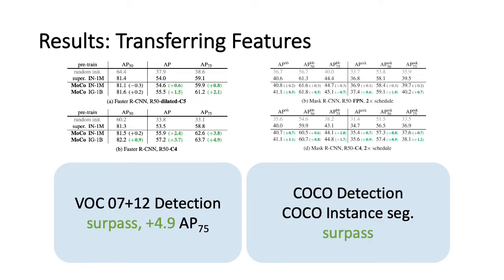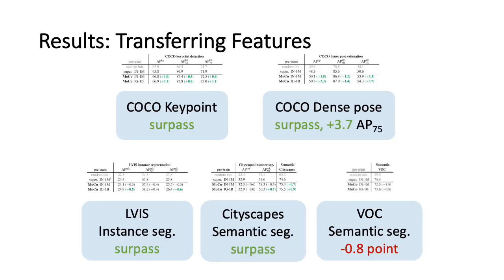We have studied many more datasets and tasks and observed promising results, including VOC detection with the larger training set, COCO detection, COCO instance segmentation, COCO keypoint, COCO dense pose, LVIS instance segmentation, and CityScapes semantic segmentation. We have observed a negative result on VOC semantic segmentation, but the gap is pretty small. All these results show promising signals of unsupervised representation learning.